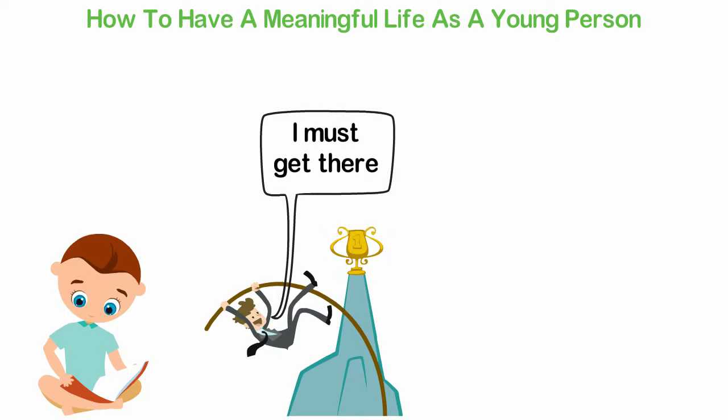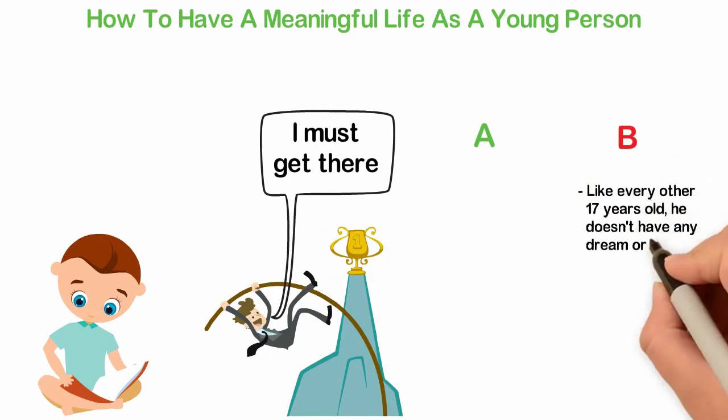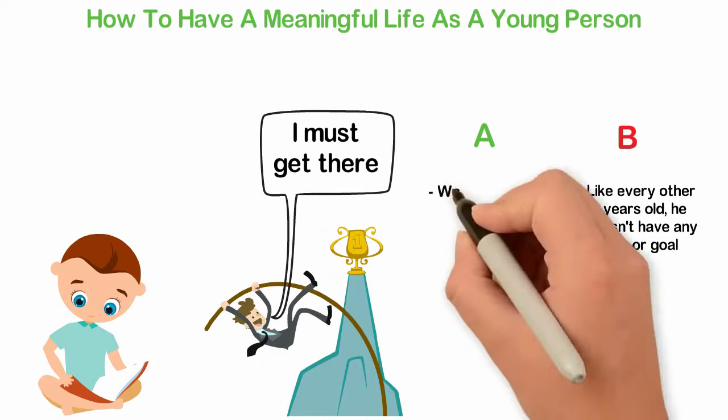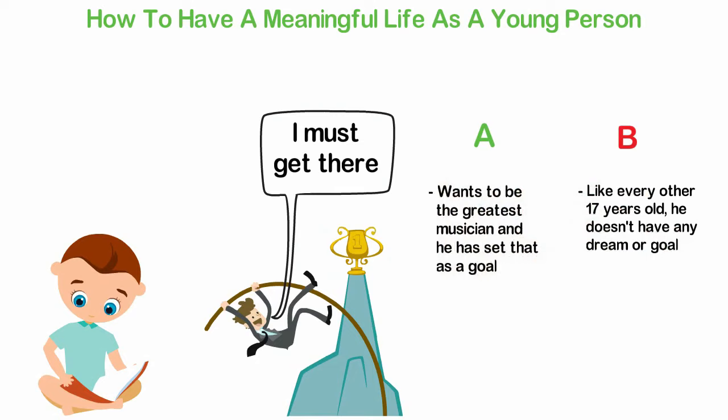Let's do this together. Let's assume that there are two young people. One is like every other 17-year-old. He doesn't have any dream or goal, while the second guy wants to be the greatest musician and he has set that as a goal. Do you think these two people will live the same kind of life? I don't think so.